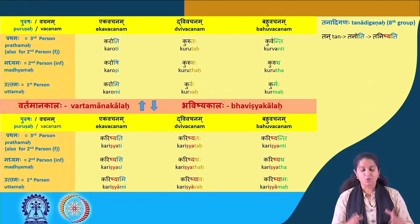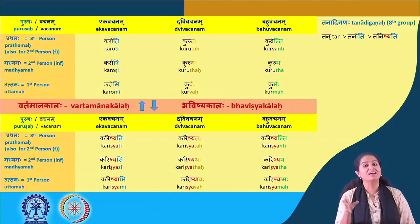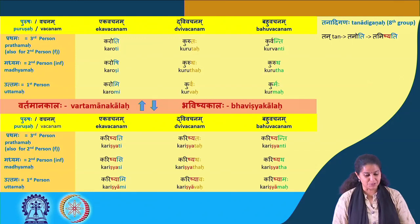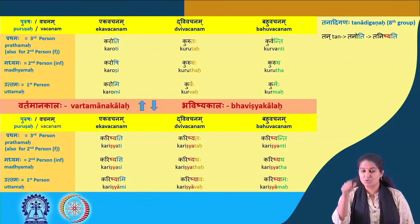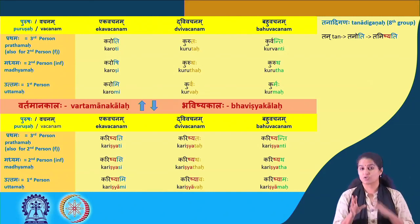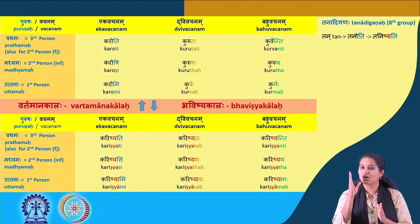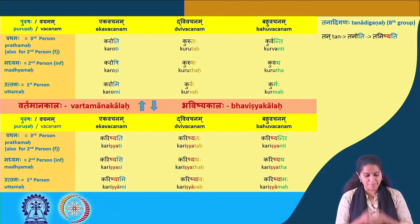Let us compare the forms side by side. Karoti — Shrinoti, Kurutaha — Srinutaha, Kurvanti — Srinvanti, Karoshi — Srinoshi, Kurutaha — Srinutaha, Karomi — Srinomi, Srinvaha — Kurvaha. Note that there is no Kuruvaha here; it is only Kurvaha, just as Srinvaha becomes Kurvaha, and Kurmaha — uttamam.